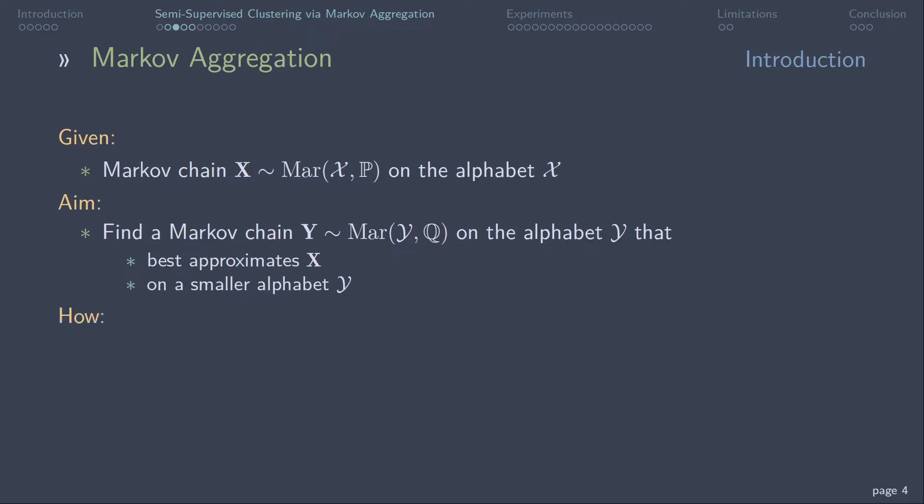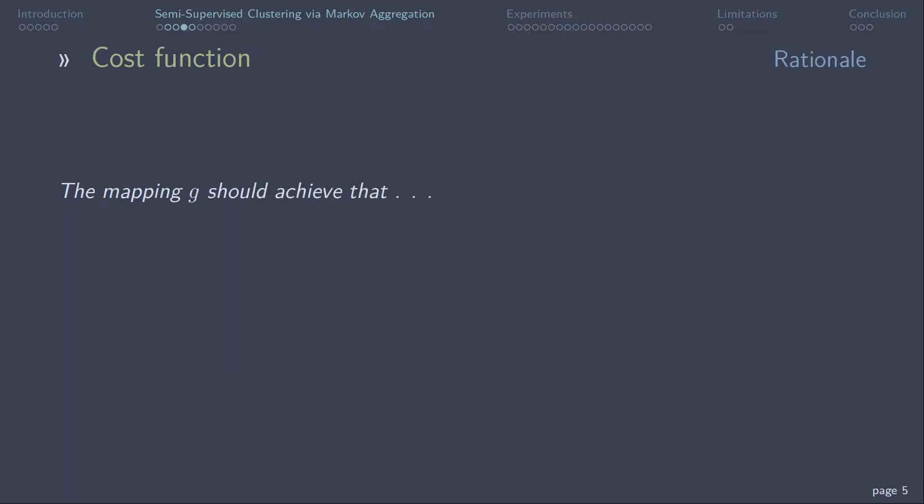How is this done? By mapping X onto Y via a deterministic mapping G. The mapping G should achieve that the hidden Markov process Y is Markov and preserves the temporal dependence structure of X.